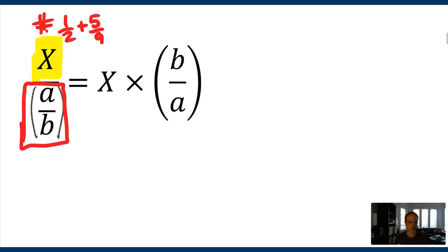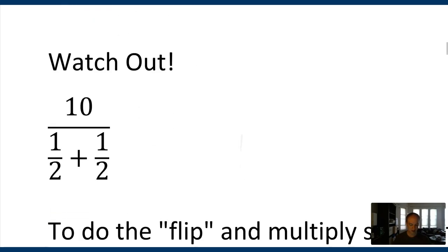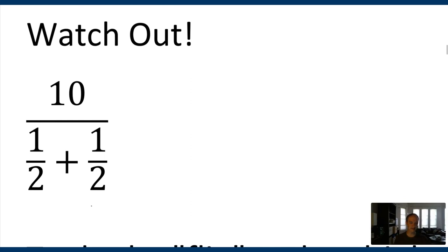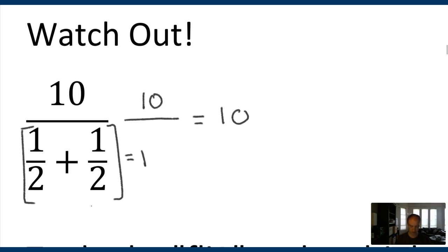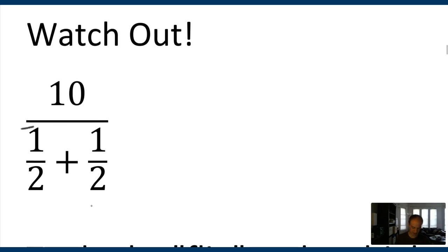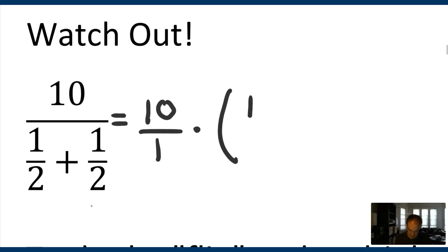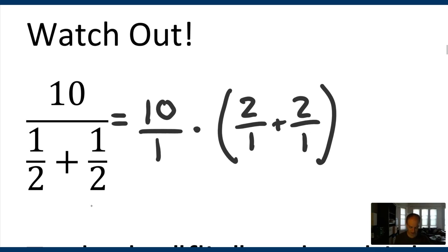There's a lot of temptation to apply this rule too early before you have a single fraction on the bottom. That's one of the biggest sources of mistakes I see when people in Math 4 are doing problems like this. For example: we have 10 divided by the sum of 1/2 plus 1/2. With numbers, you can intuit that 1/2 plus 1/2 is 1, so this is really 10 divided by 1, which is 10. Now check out what an incorrect solution might look like — so by the rule above, someone might write 10 over 1 times 2 over 1 plus 2 over 1, taking that idea of reciprocal and multiply and applying it too early.